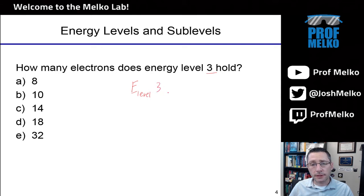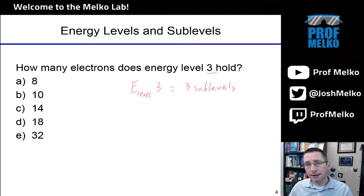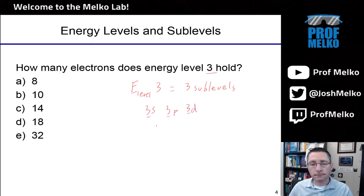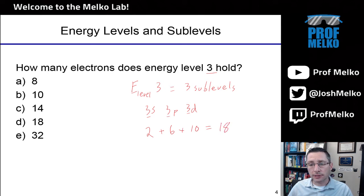Energy level 3 means there are three sublevels — the number of the energy level equals the number of sublevels. The sublevels are always ordered S, P, D, F. So for the third energy level, there's an S, a P, and a D sublevel. S sublevels always hold 2 electrons, P sublevels always hold 6 electrons, and D sublevels always hold 10 electrons. Adding those up: 2 + 6 + 10 = 18 electrons total. The answer is 18.